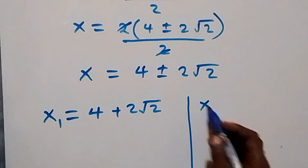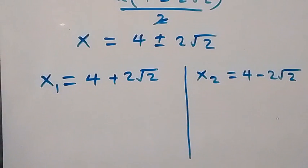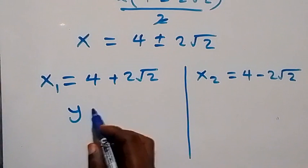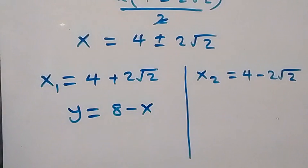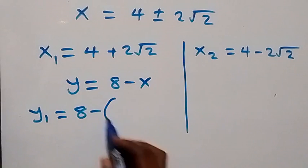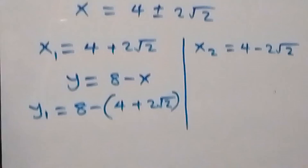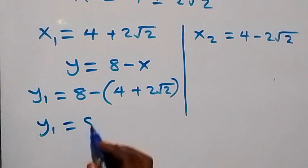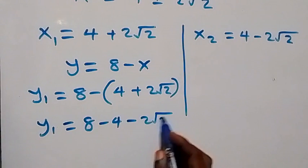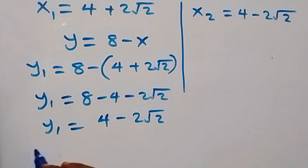To find the corresponding values of y, we use the relation y equals 8 minus x. So y1 equals 8 minus x1, which is 8 minus (4 plus 2 root 2). This gives y1 equals 8 minus 4 minus 2 root 2, so y1 equals 4 minus 2 root 2. The first set of solutions is (x1, y1) equals (4 plus 2 root 2, 4 minus 2 root 2).